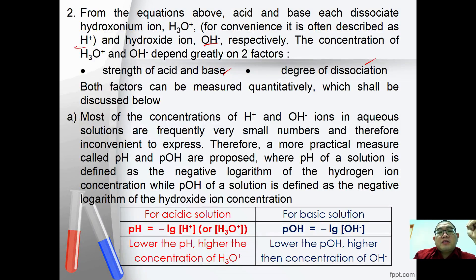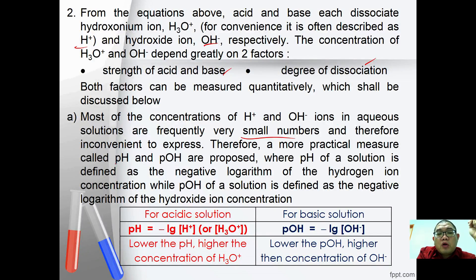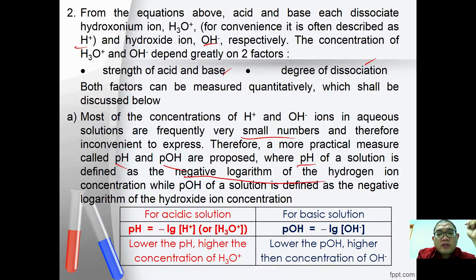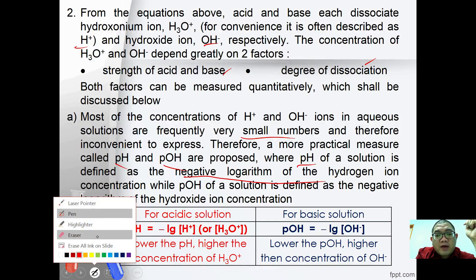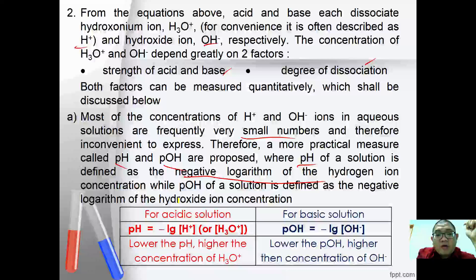The concentrations of H⁺ and OH⁻ in aqueous solutions are frequently very small numbers and therefore inconvenient to express. A more practical measure called pH and pOH is proposed. The pH of a solution is defined as the negative logarithm of the hydrogen ion concentration, while pOH is defined as the negative logarithm of the hydroxide ion concentration. For acidic solutions, pH = −log[H⁺], and for basic solutions, pOH = −log[OH⁻].